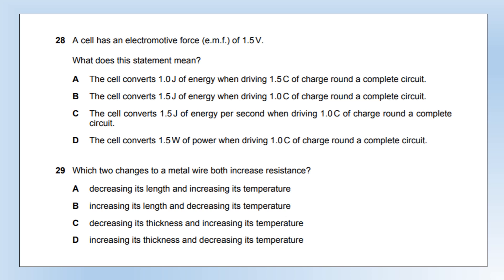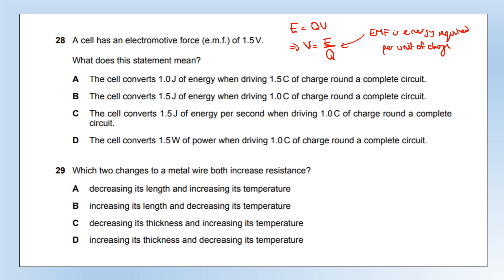A cell has an electromotive force of 1.5 volts. What does this mean? Using the equation E = QV (or V = E/Q), EMF is the energy required per coulomb of charge. So 1.5 volts means 1.5 joules per coulomb — that's option B.